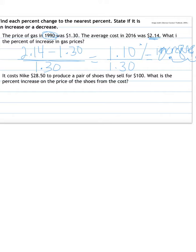So they originally make it for $28.50, and then they sell it for $100. So then we're looking for the price of increase. So the larger number minus the smaller, the new minus the old, divided by the original. Well, when they originally make the shoes, they're $28.50.